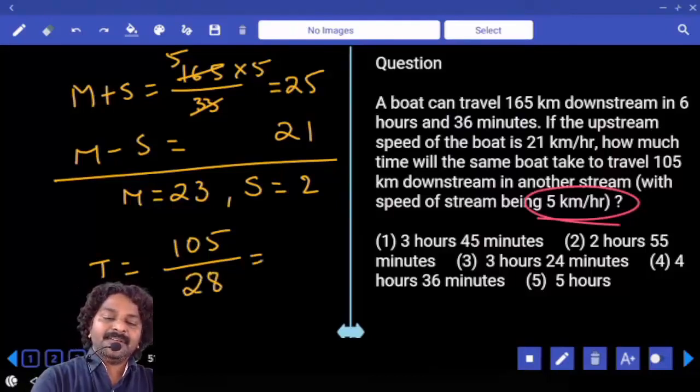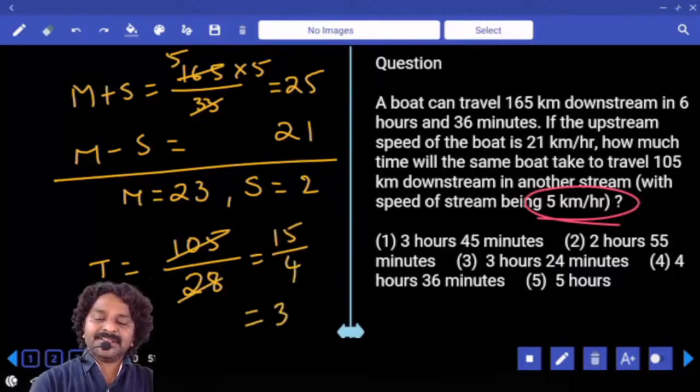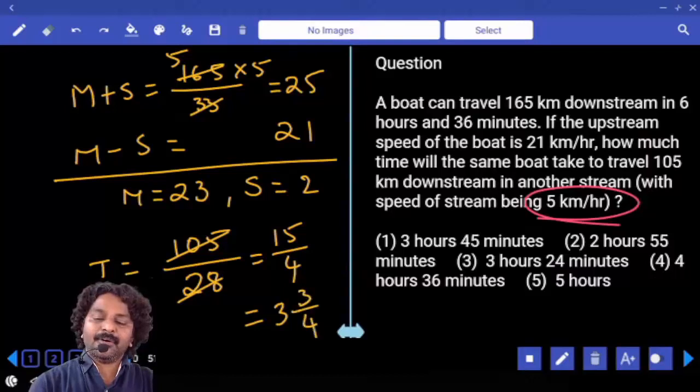28. For 105 by 28: 15 times 7, 4 times 7, that is 3 and 3 by 4 hours.